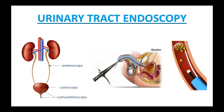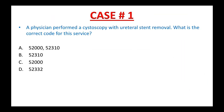Alright, I'm ready to tackle the first case. Follow my tip and strategy. A and C have the same code 52000, so they are in the same group. B and D have different codes: 52310 and 52332, so they are in different groups. This step tells you how many codes you need to look up in your CPT book — there are three codes: 52000, 52310, and 52332. Please pause the video and look them up now.